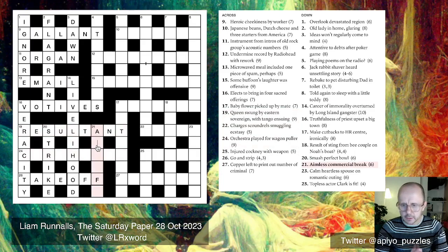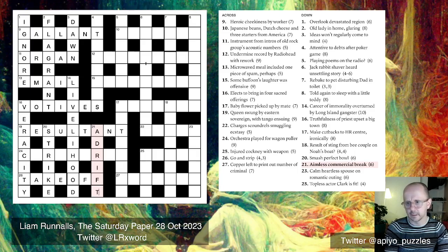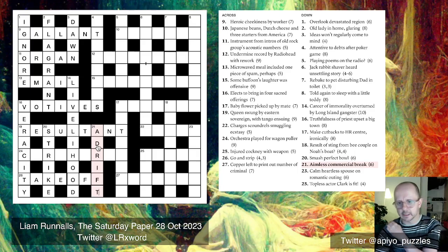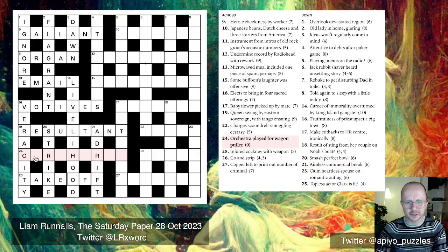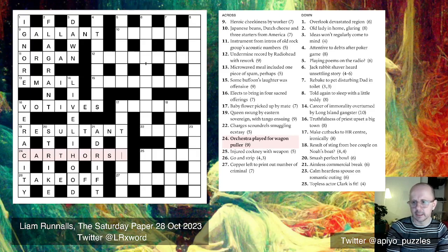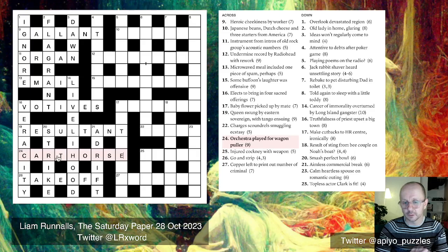21-down: 'aimless commercial break.' A commercial is an ad on TV, and a break between two people is a rift, so ADRIFT means aimless. 24-across: 'orchestra played for wagon puller' — this is an anagram of 'orchestra' giving CARTHORSE. I was struggling because I was thinking of the person who drives the cart rather than the horse that pulls it.